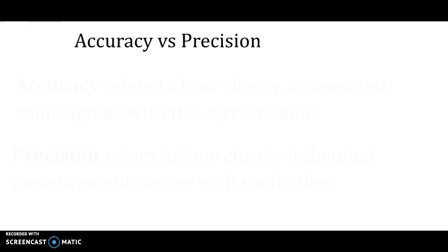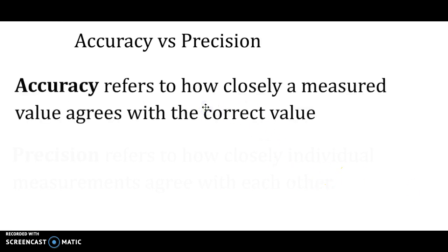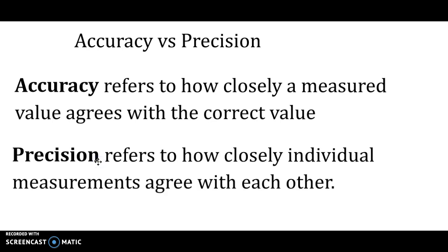We also need to talk about what the difference is between accuracy and precision. So with accuracy, it refers to how closely a measured value agrees with the correct value. So if we do a test to measure something, we know what the value should be, and then there's what we get. And how close what we get is to the reality is accuracy. Precision is if we do multiple measurements, how close is one measurement from the next one.